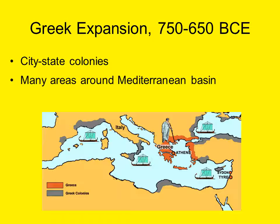The period of significant Greek expansion occurs in the 8th and 7th centuries BCE. City-state colonies began rising all around the Mediterranean. Colonies appeared as far west as modern-day Spain and into present-day Israel and Lebanon. This was a time of significant trade and industry growth, and also the rise of a wealthy, non-noble merchant class.